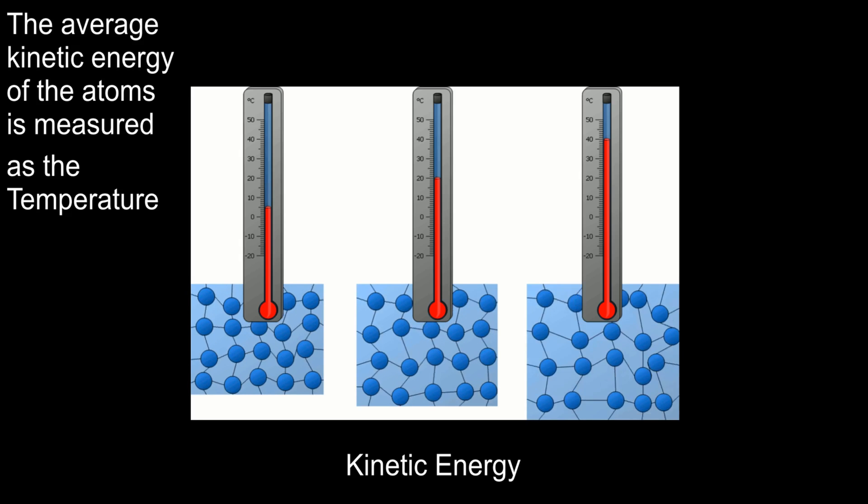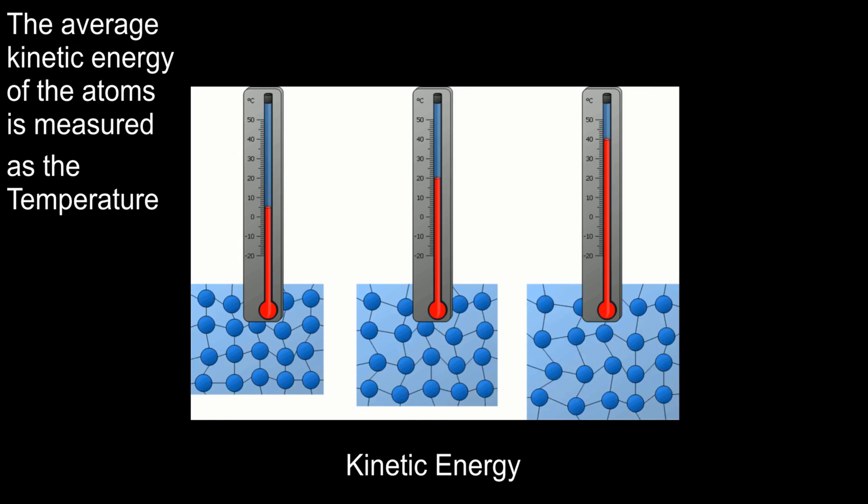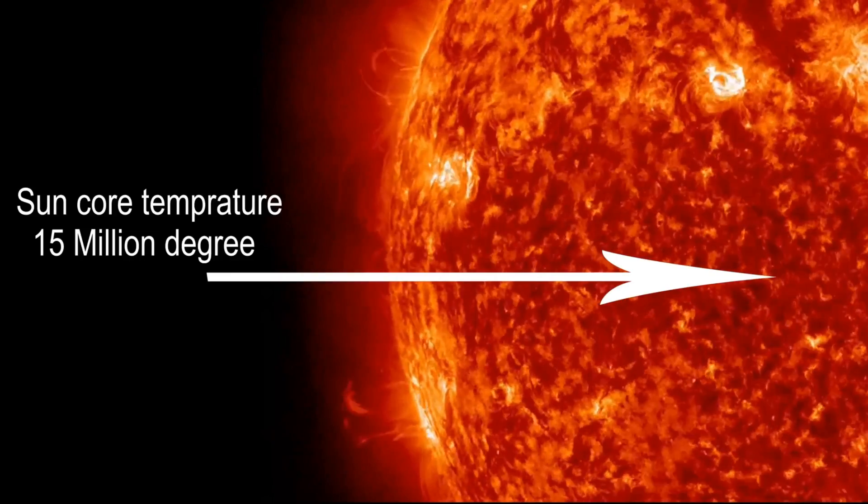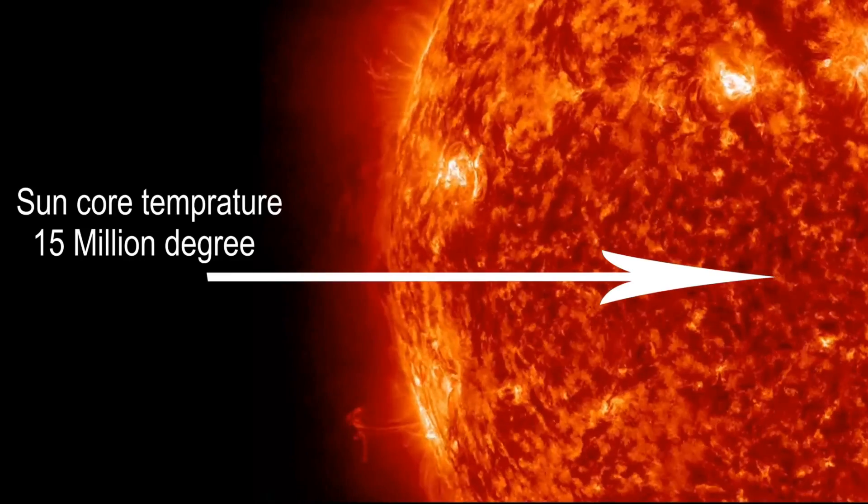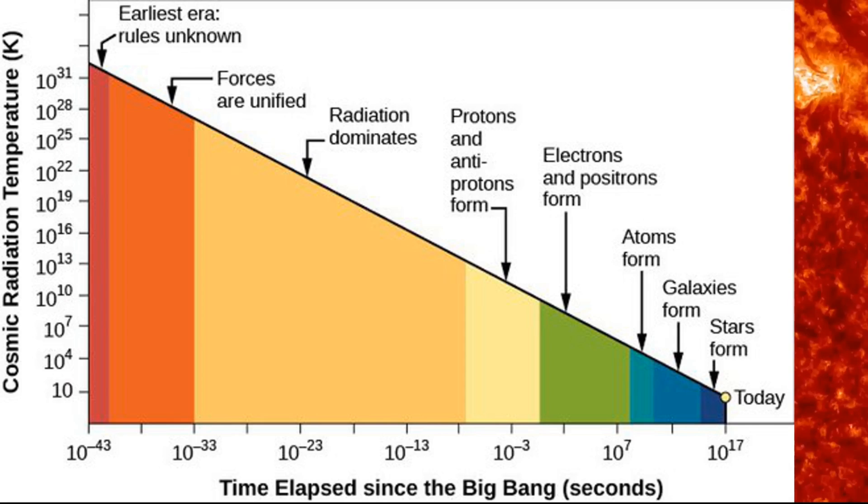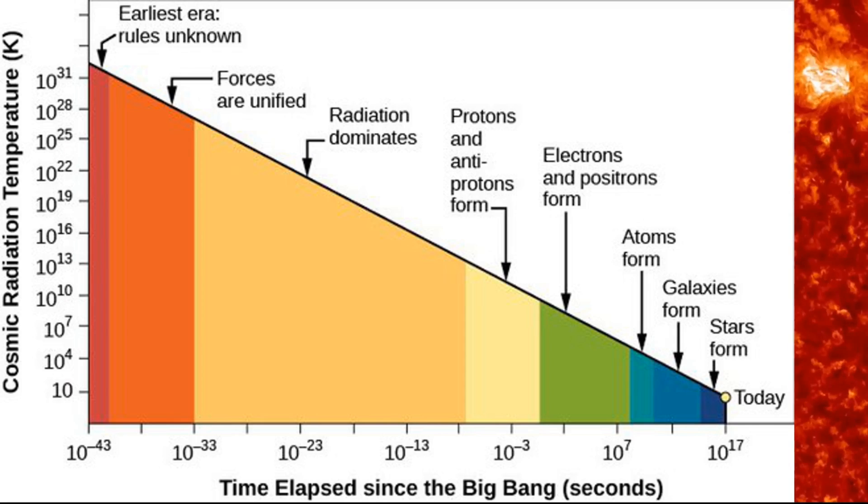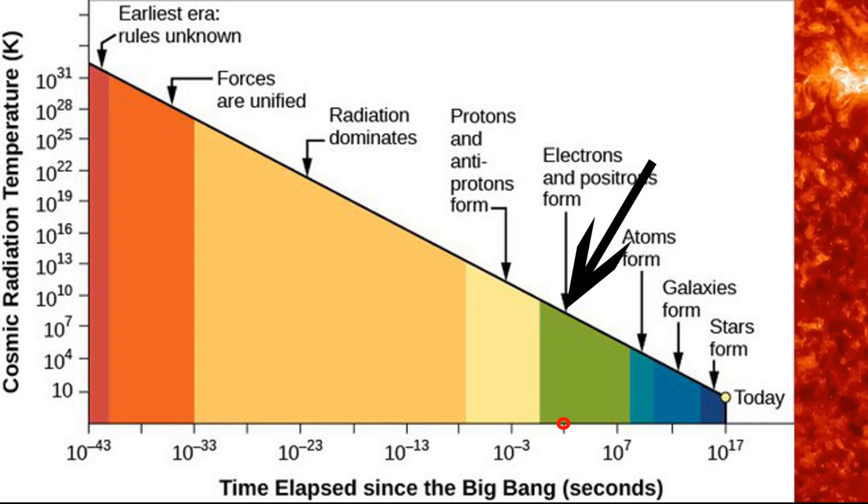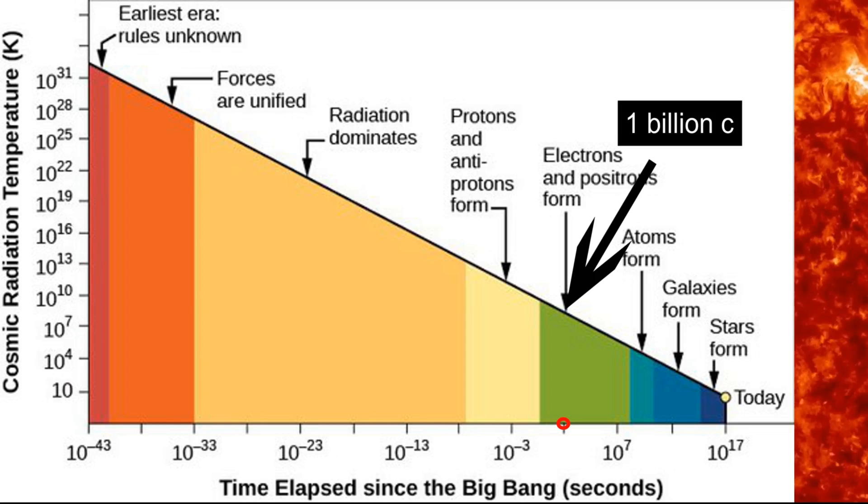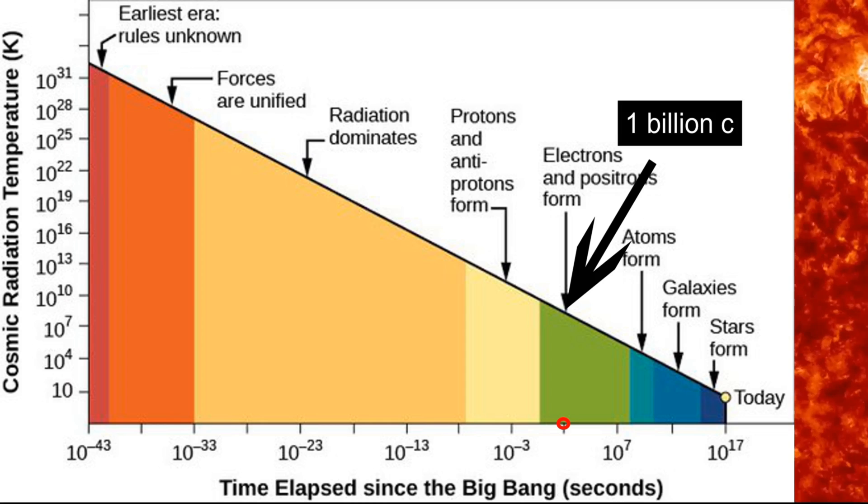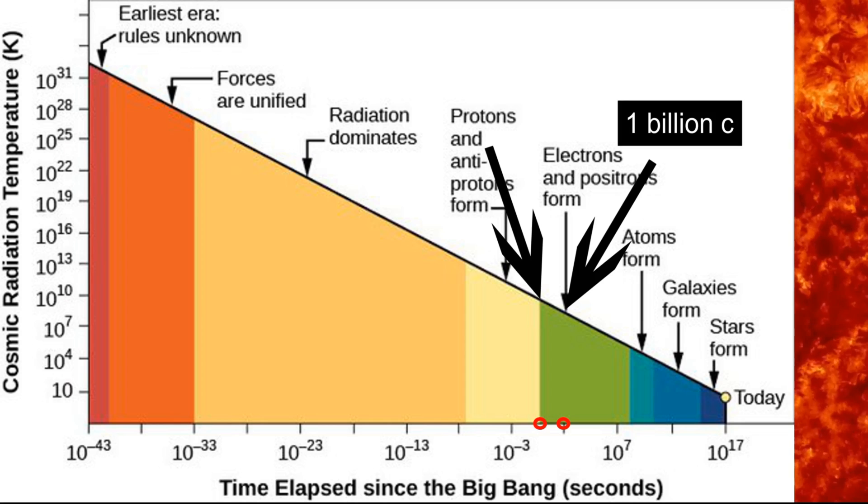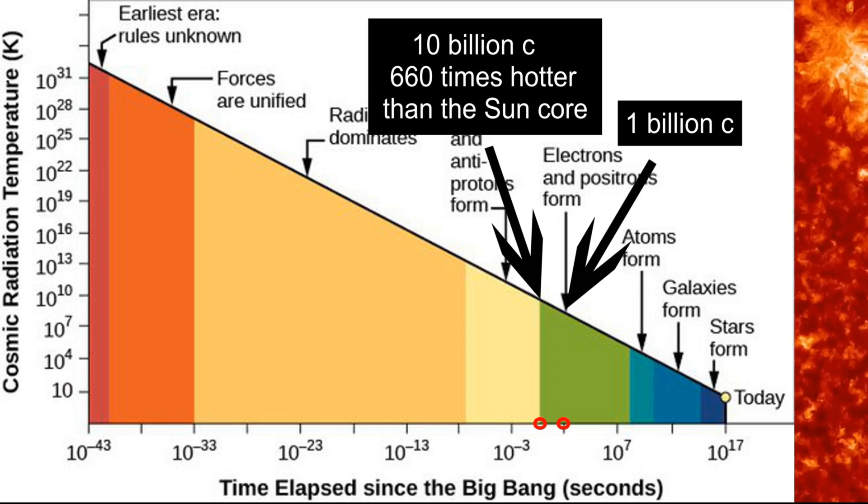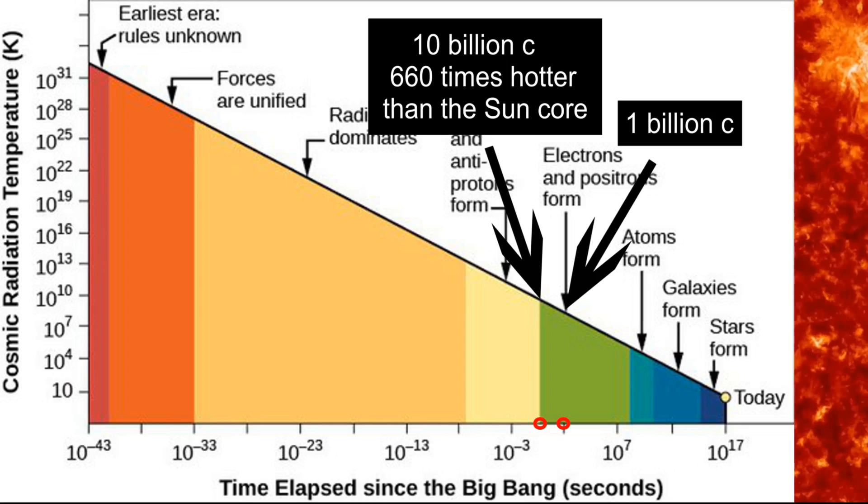This explains absence of an upper level for the temperature. At the Sun core, for example, temperature is 15 million Celsius, and at the early universe, temperature was much higher. At the end of the first hundred seconds of the universe age, temperature was 1 billion degrees. And at the end of the first second, temperature was 10 billion degrees, 660 times hotter than the Sun core.